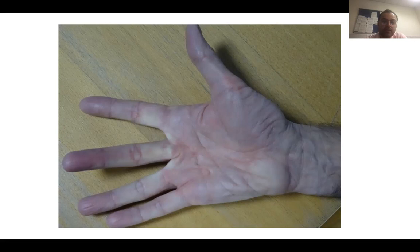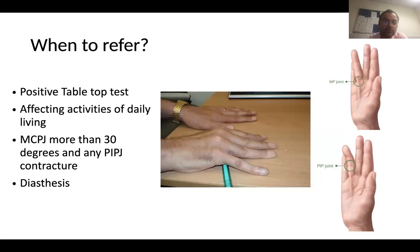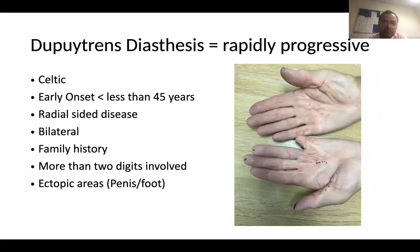Only if it's causing functional problems, then think about surgery. One test that you can do is the tabletop test. The patient is unable to place his hand flat on the table, and it's affecting their job and activities of daily living. The NHS criteria is if the MCP joint is contracted more than 30 degrees, and if there's any PIP joint contracture, then that's an indication to refer and also to consider surgery. Also look at the diathesis — this is when patients have bilateral disease, early onset, radial sided, so affecting the thumb as well.